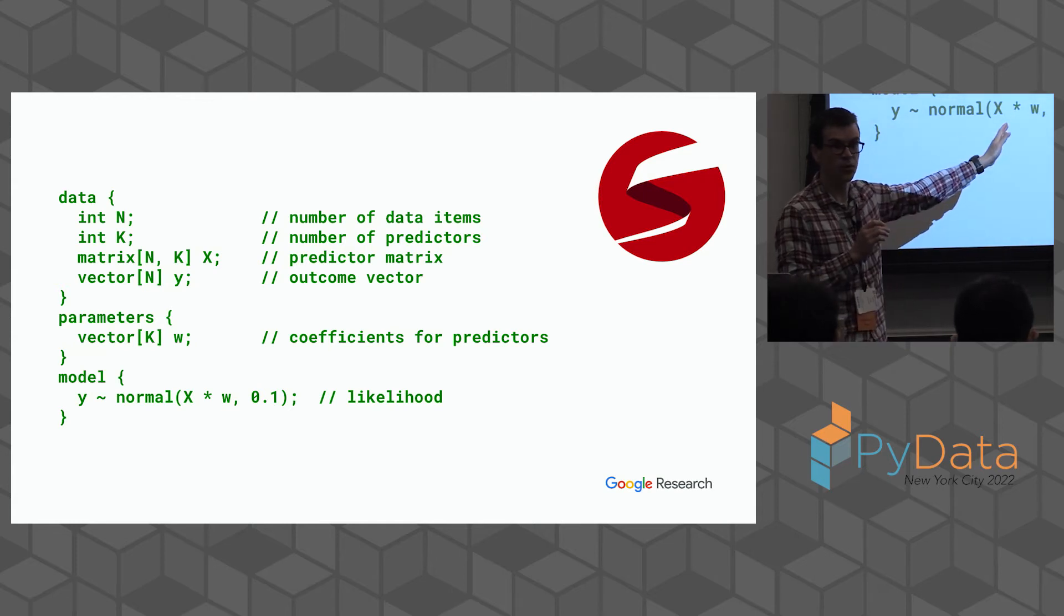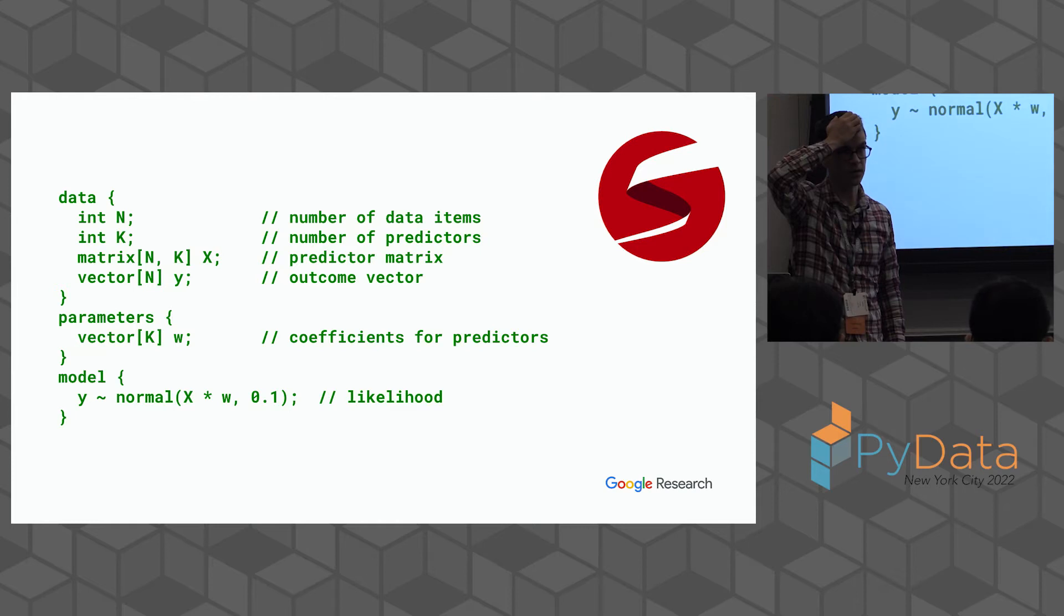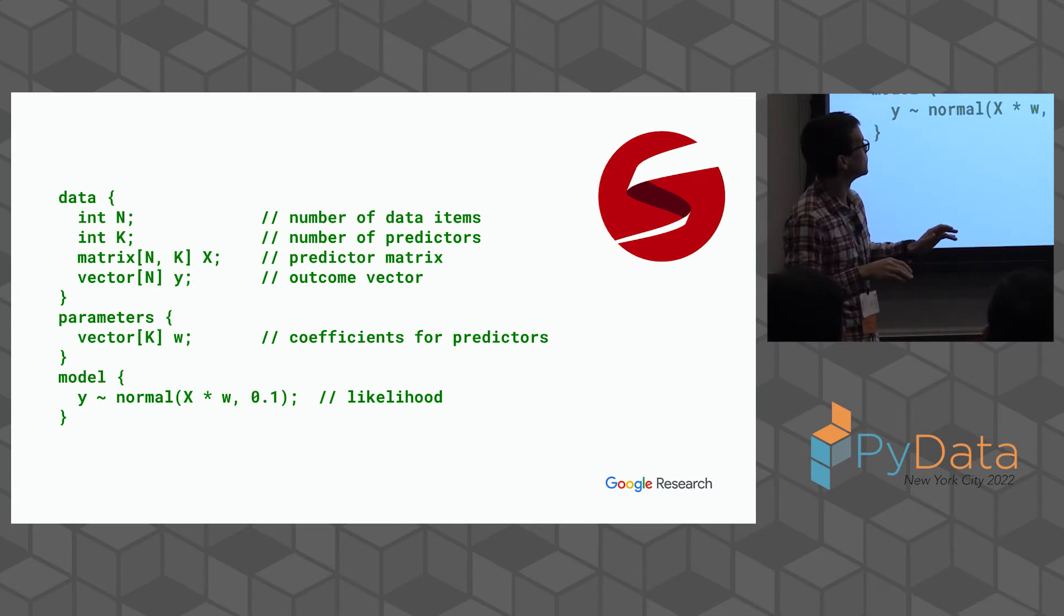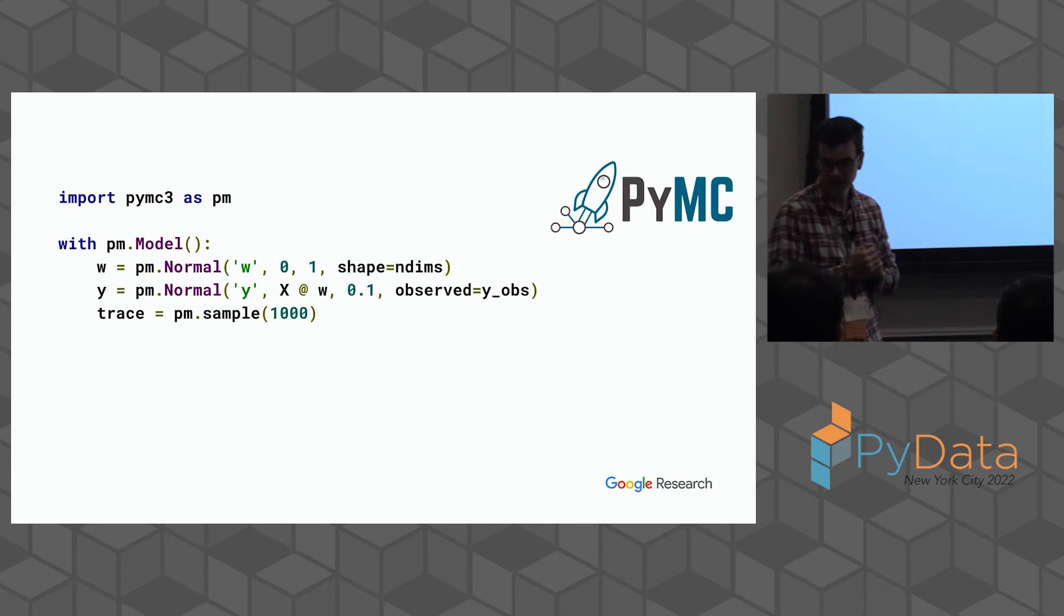This is Stan. Stan is its own programming language. It started with Andrew Gelman's group over at Columbia. It's NumFOCUS supported. It's fantastic. I won't say anything bad about Stan ever. Everyone tries to be like Stan. We should all try to be like Stan. This is what the model looks like in Stan. If you're using R or Python, there are good bindings to use there. Command Stan is great. This will run really fast. This is not using JAX. This is using its own autodiffer.